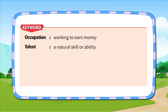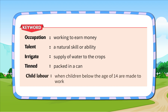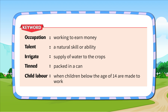Glossary. Talent: A natural skill or ability. Irrigate: Supply of water to the crops. Tinned: Packed in a can. Child labour: When children below the age of 14 are made to work.